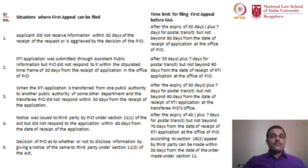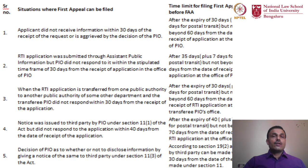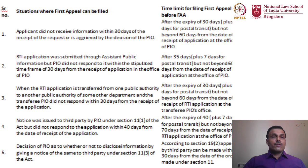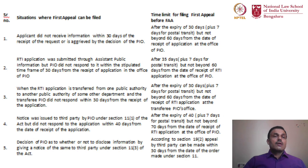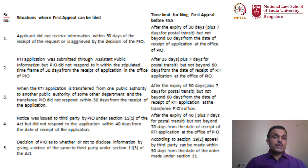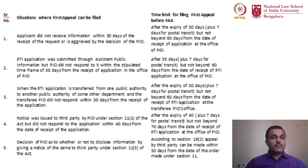The time framework under the RTI Act is quite interesting. Let us assume the applicant did not receive information within 30 days of the request and is aggrieved by the PIO's decision. After expiry of the 30-day period, plus a few additional days for communication, the citizen has 60 days to file the first appeal. If the RTI application was submitted to an Assistant Public Information Officer, the PIO gets 35 days. After waiting those 35 days, you can prefer the first appeal.